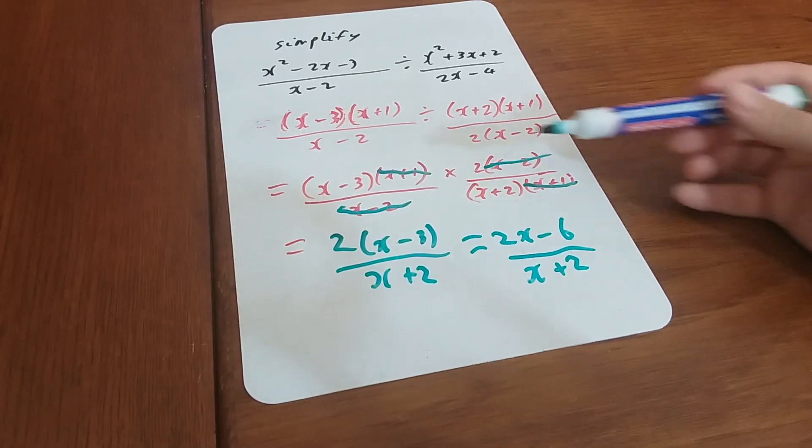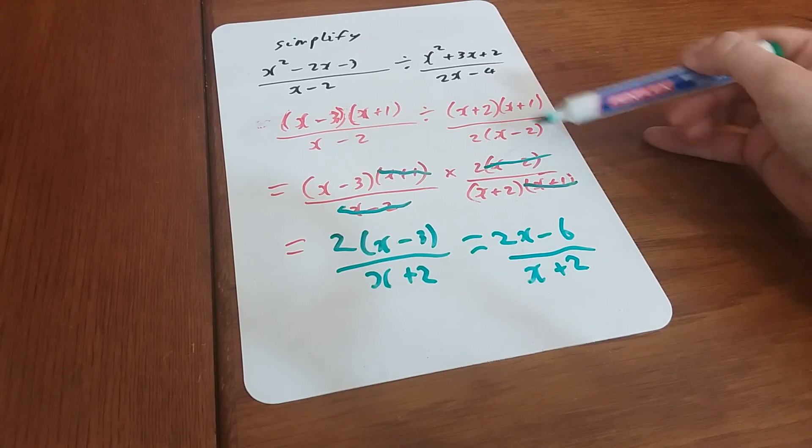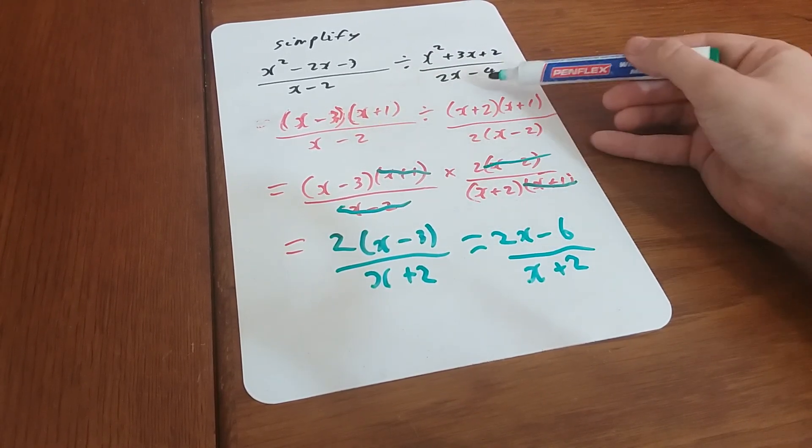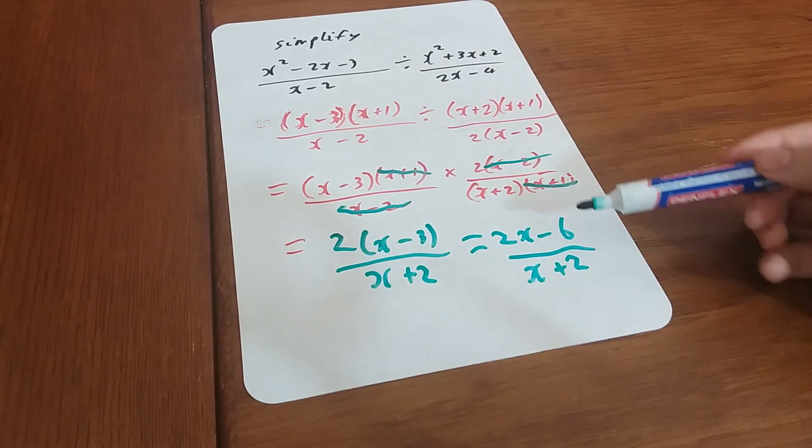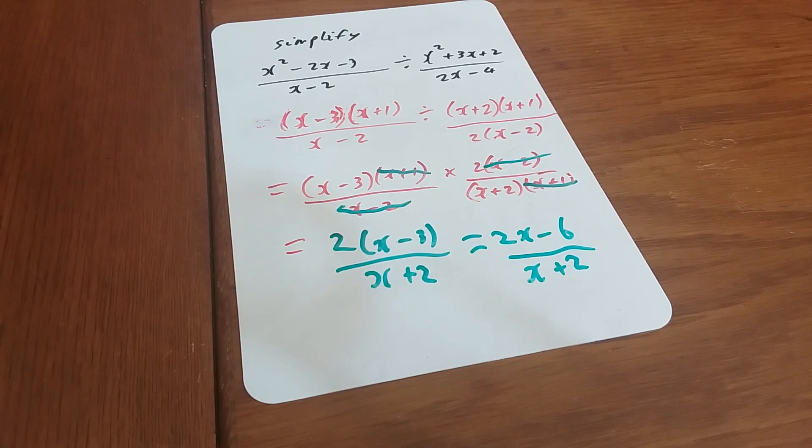Notice that when I did the factorization on this step here, it made that bracket look the same as that one, whereas if we left it as 2x minus 4, it might not have been obvious that those two cancel out. This is as simplified as we can get, and we're done.